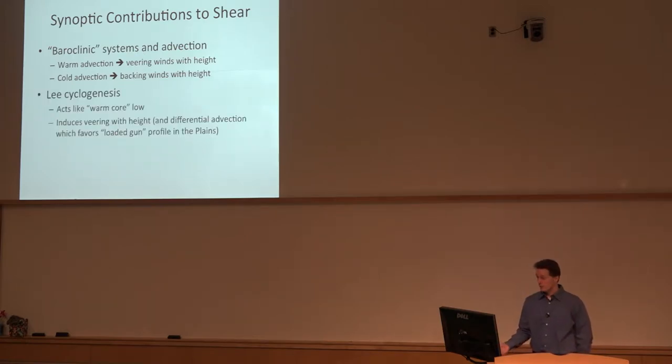And then there's also lee cyclogenesis across the Great Plains. Secondarily you can get this in the lee of any range like the Appalachians, but it's primarily central United States where this is most relevant. It acts like a warm core low. The warm air descends down the east slope of the mountains. The warming induces lower pressure, conservation of absolute vorticity, and we can end up creating a cyclone or a trough that induces a varying wind profile with height and also the differential advection that results in that loaded gun profile like you saw in the lapse rate case looking at the May 3rd 1999 example from Norman.